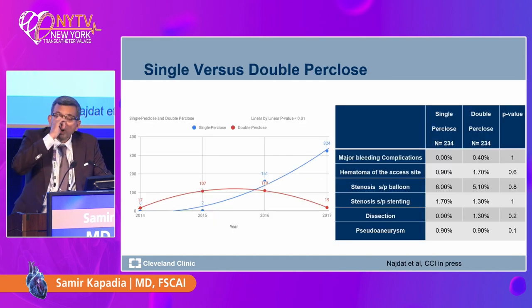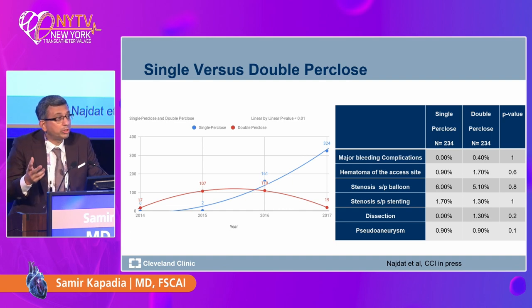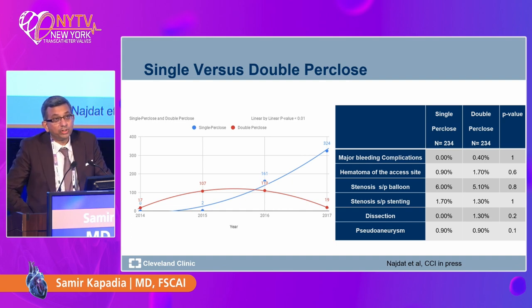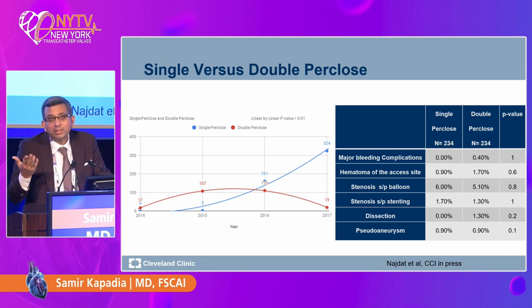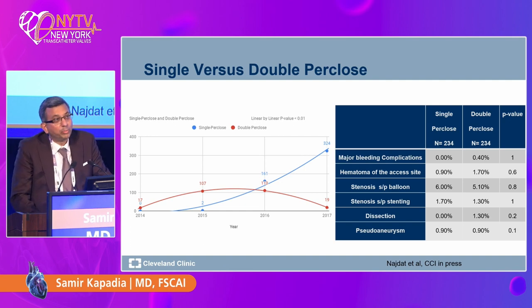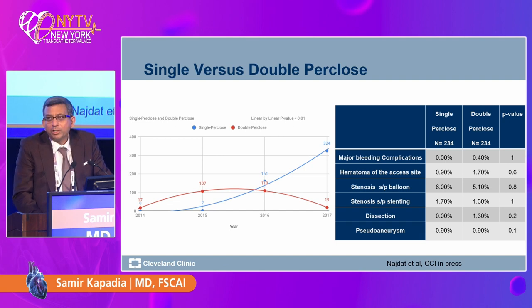We also use one Perclose — we don't use two Percloses, just a single Perclose for the large sheath. At the end, in about 66 to 70 percent of patients, we need an Angioseal device. So we studied this to say that at least 30 percent of the time, we can save the second device. We also think complications regarding pinching of the artery are a little bit better.